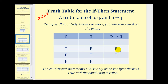There are a couple of ways to make sense of this third column. One way is to think of if P then Q as an agreement or promise by your instructor that if you study four hours or more, you will score an A on the exam. The only time if P then Q would be false is when the instructor violates this agreement or promise.